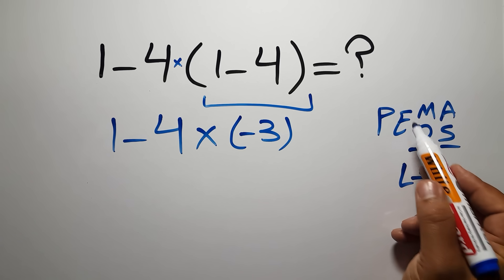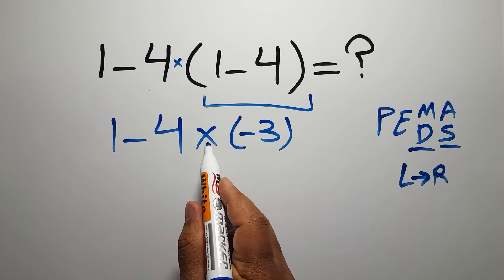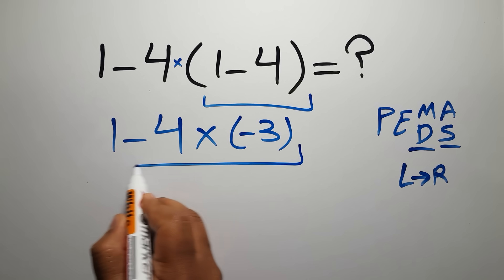So minus 4 times minus 3 gives us positive 12.